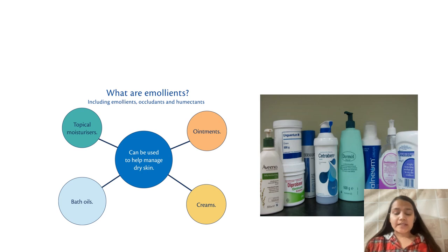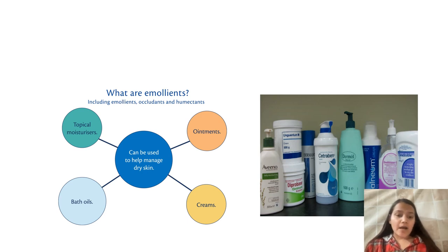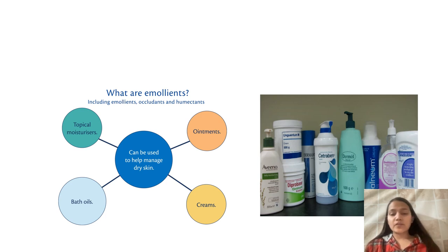Emollients can include occlusive agents and humectants, and they can be used to help manage dry skin. There could be ointments, creams, bathing oils and moisturizers. Some brands such as Aveeno, Cetraben and Dermol produce these creams and ointments, used not just for moisturizing but also for eczema, inflammation and other conditions.